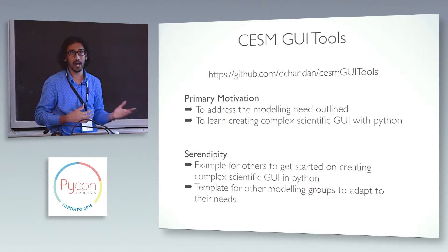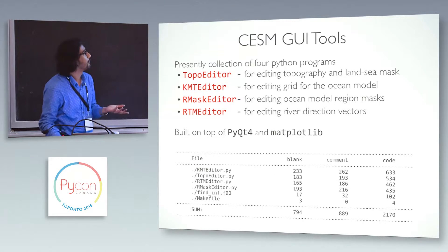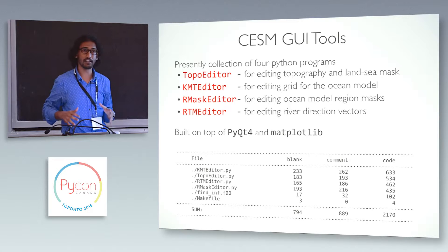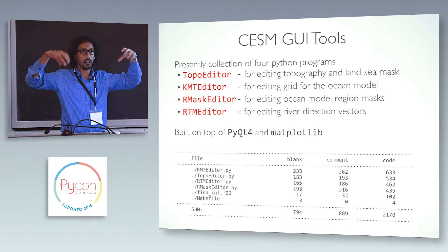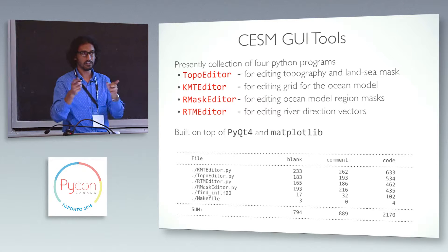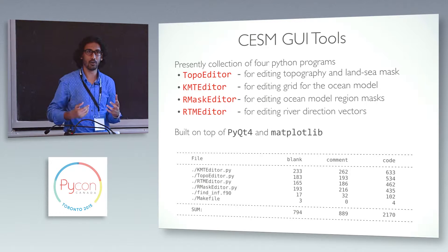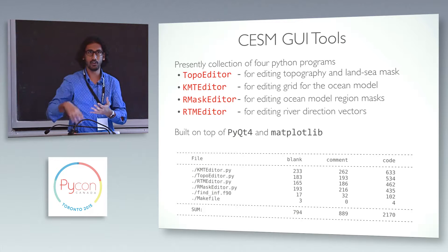Other research groups might also be able to adapt this code for their own purposes. The GUI tools are composed of four different Python programs: one is the topography editor for editing topography and the land-sea mask; another is for editing the grid for the ocean model; then there is an R-mask editor for the ocean model. And one interesting element is that when water falls from climate models onto land, that water has to be redirected to the ocean so that salinity is conserved. There are direction vectors that tell where the river should go, and you have to manually fix those vectors for different topographies — otherwise water just keeps circulating on land and the ocean's salinity keeps changing.